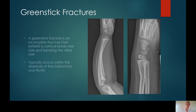A greenstick fracture is an incomplete fracture that demonstrates a cortical break on one side and then bending of the cortex on the other side. It more typically occurs within the diaphysis of the radius/ulna or tib-fib, and it needs a bit more force applied to create a greenstick fracture rather than a buckle fracture.